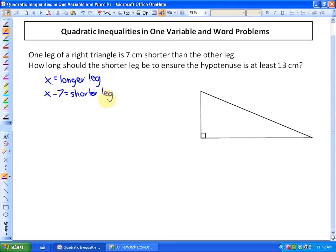It's always good to represent how you're using the variable. My longer leg is x, shorter leg is x minus 7. The hypotenuse is at least 13 cm, which means the hypotenuse has to be greater than or equal to 13. We can use the Pythagorean relationship to set up an inequality: a squared plus b squared equals c squared.